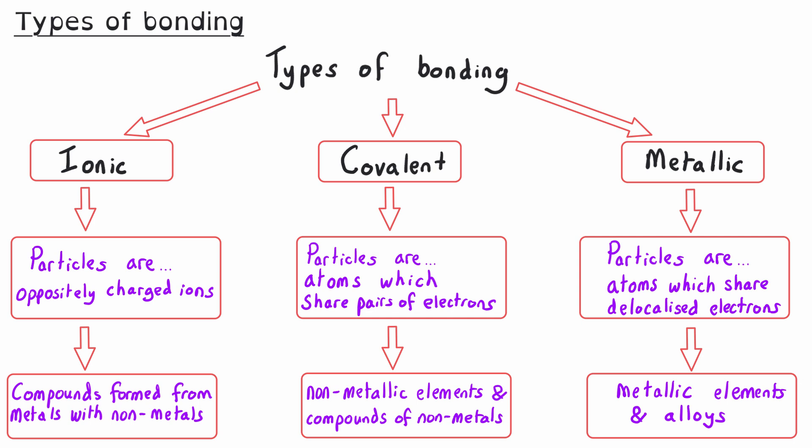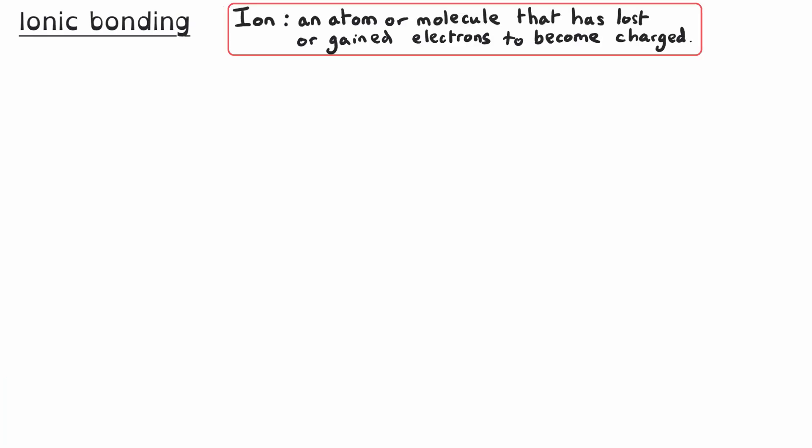In this video, we will look in detail at ionic bonding. To understand ionic bonding, we need to first remember what ions are. An ion is an atom or a molecule that has lost or gained electrons and become charged, and ions can be positively or negatively charged.